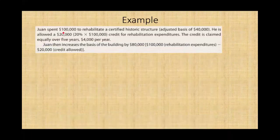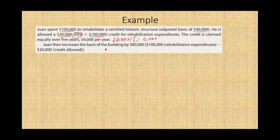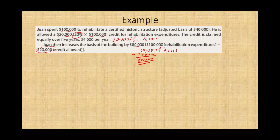Juan spent $100,000 to rehab a certified historic structure with an adjusted basis of $40,000. The credit is $100,000 × 20% = $20,000, claimed equally over a five-year period at $4,000 per year. Juan increases his basis in the building by a net of $80,000: he spent $100,000, which raises basis, then reduces it by the $20,000 credit.